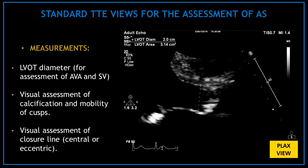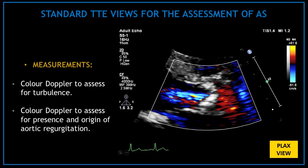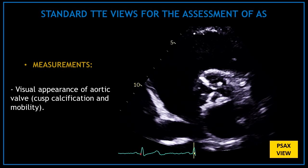Perform a visual assessment of the aortic calcification and mobility of the cusps, and look at the valve closure line — determine if it is central or eccentric. In the same view, use color Doppler to assess for turbulence or for the presence and origin of aortic regurgitation. Now let's move to the parasternal short axis view at the aortic valve level.